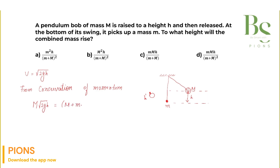After the collision, both masses stick together as (M + m) moving with final velocity v dash. Solving, v dash equals M divided by (M + m), multiplied by √(2gh). This is the final velocity of the combined system right after they combine.